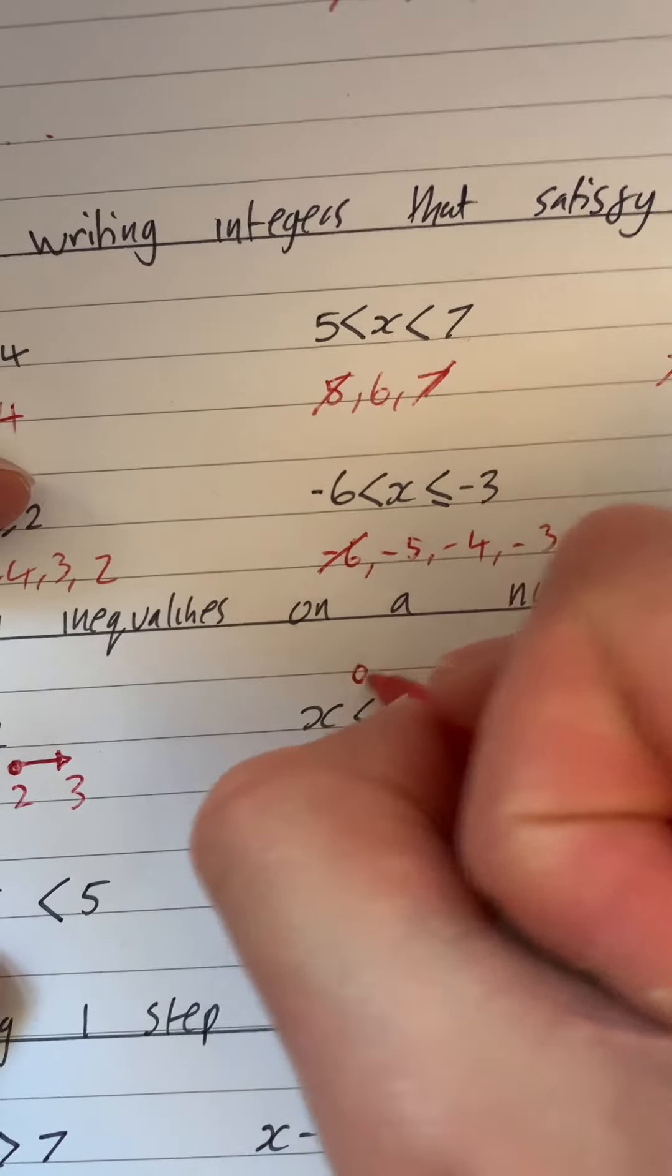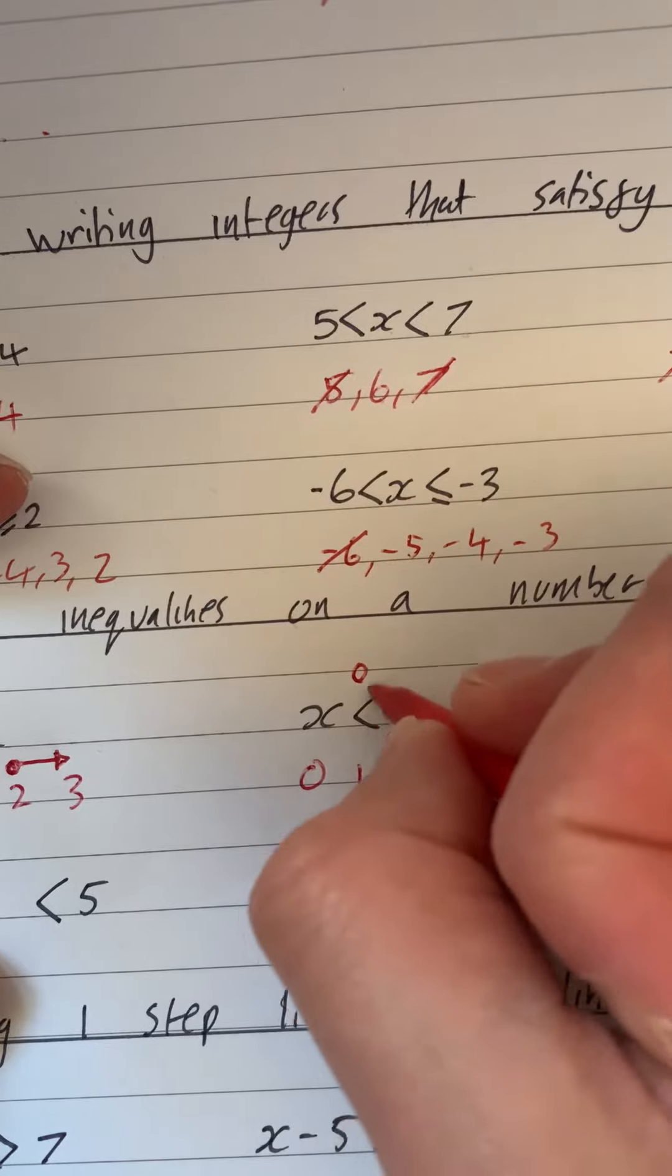This one says x is less than zero. So we do a little one, two, three, little number line.